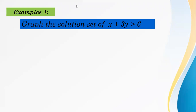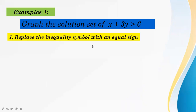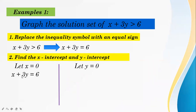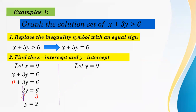Example number 1: graph the solution set of x plus 3y greater than 6. First, replace the inequality symbol with an equal sign: x plus 3y equals 6. Then find the x-intercept and y-intercept. Let x equal 0: 3y equals 6, so dividing both sides by 3 gives y equals 2.